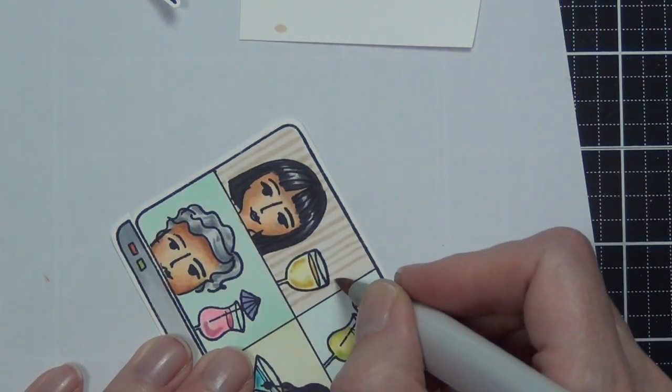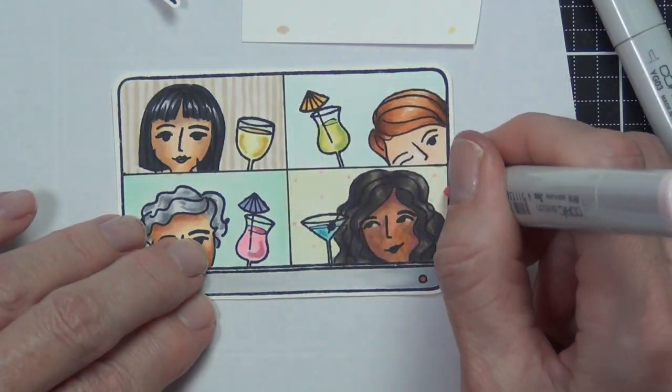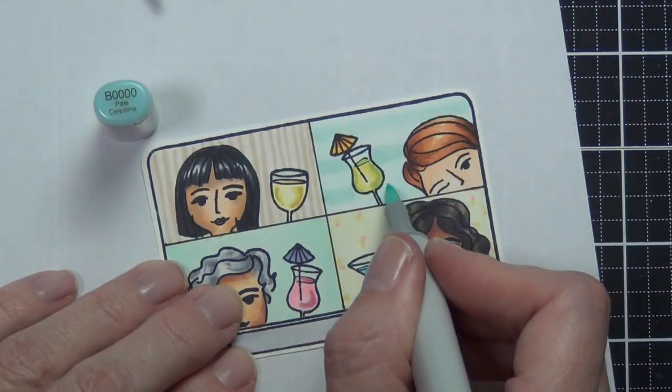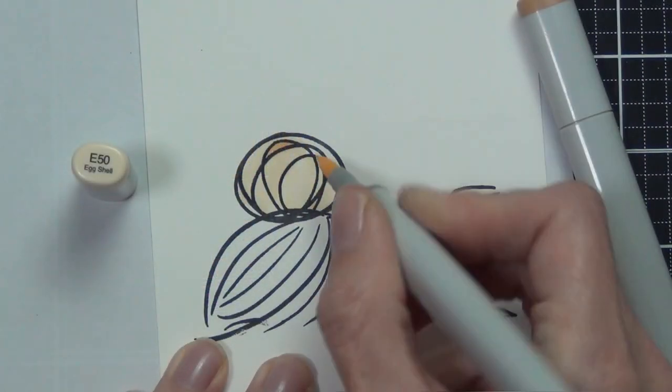I did add some backgrounds here to my little zoom faces, and I kept them really simple. I just sort of made it look like they were sitting in front of a wall or maybe in front of some wallpaper somewhere.